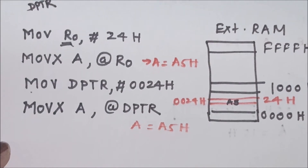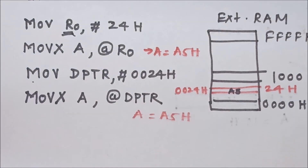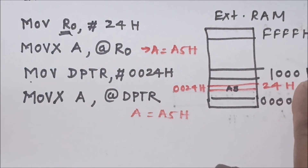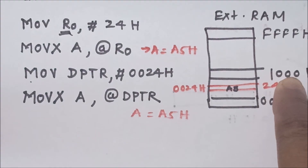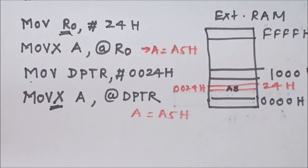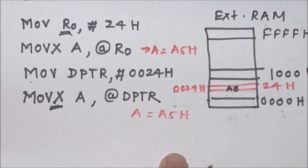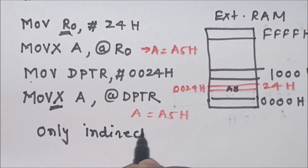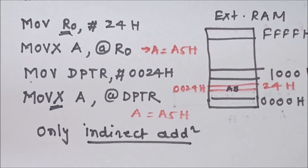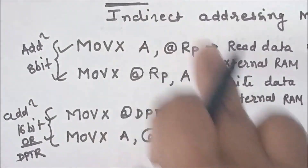You cannot store a 16-bit address in register R0 or R1. That means you cannot store address 1000H in register R0. In that case, you must use the DPTR register. Remember that MOVX is the instruction for external RAM, and only indirect addressing mode can be used for external RAM — no other instruction can be used to read or write data to external RAM.